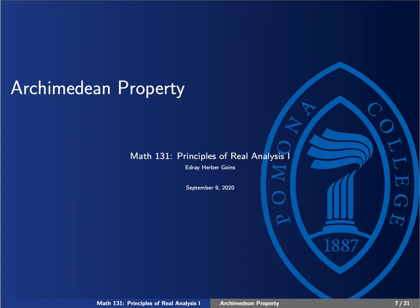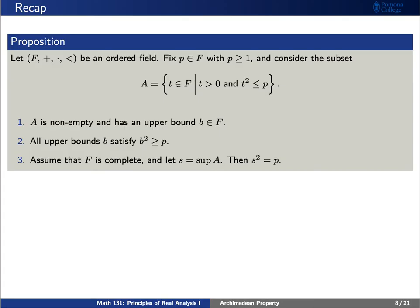Today we're going to talk about the Archimedean property. Let's recap some ideas from before. Let's say that we have an ordered field, and consider the following set once we fix a number p greater than or equal to 1. We're going to use this set in order to show the existence of the square root of p.